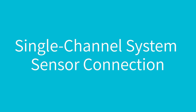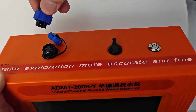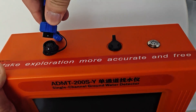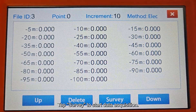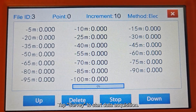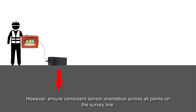Single Channel System Sensor Connection: Connect the sensor to the device. Place the sensor flat on the ground and tap Survey to start data acquisition. The survey point is directly beneath the sensor. Ensure consistent sensor orientation across all points on the survey line.